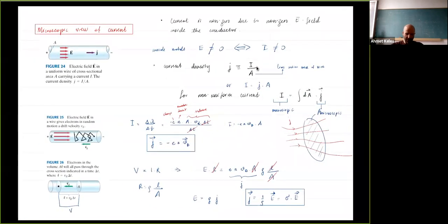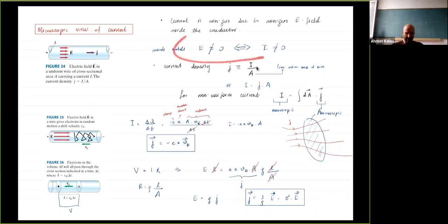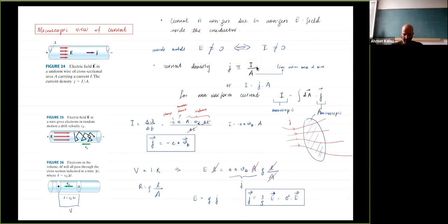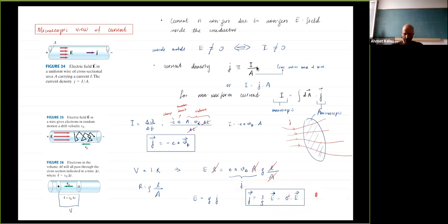We related the current density J to the microscopic drift velocity of electrons: vector J equals charge (minus e) times carrier density times drift velocity. From this, J is related to the electric field as J equals sigma times E. This is sometimes called the Drude model, or another form of Ohm's law.